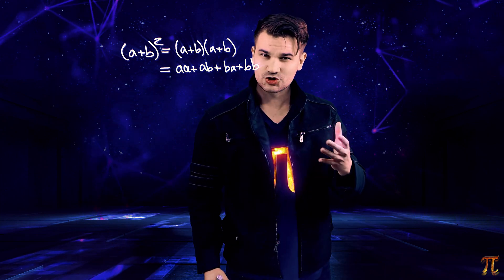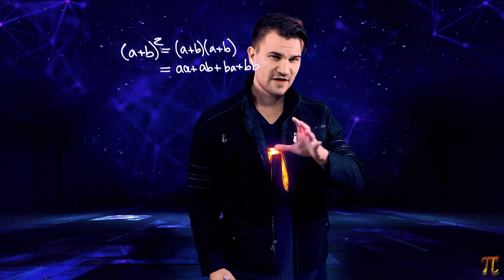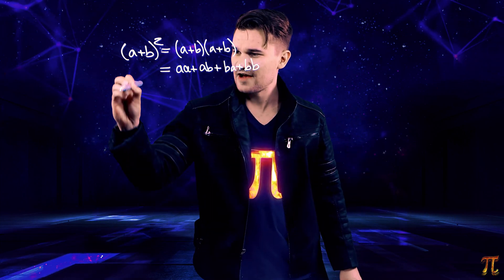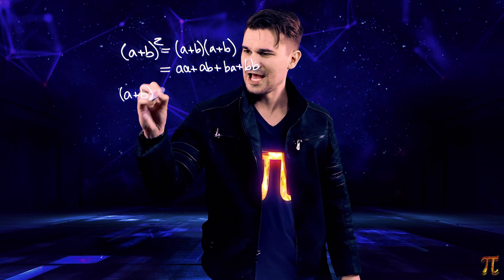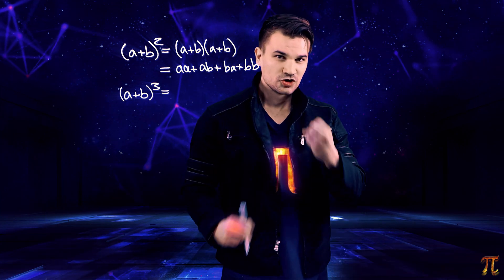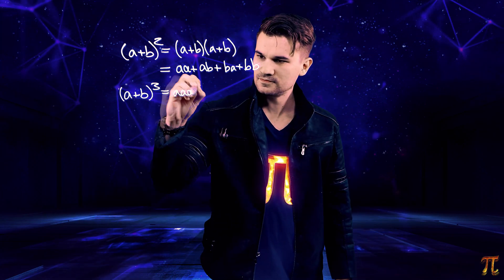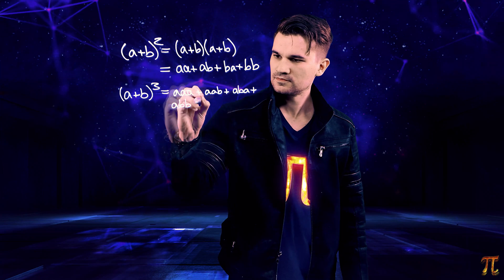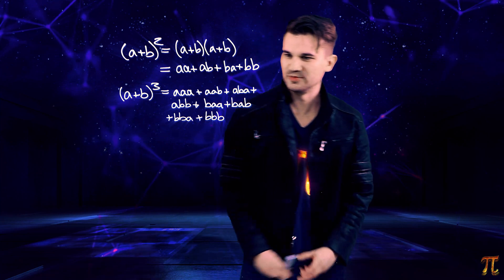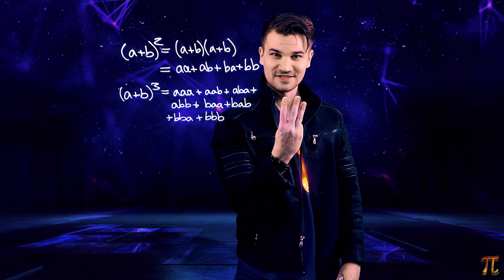And this is generally true even for other exponents — it's just going to change the string size. You can see that from just how the distributive property is going to run through these expressions. In other words, if we have a plus b and we cube it, that is nothing other than the sum of all the strings of three characters with a's and b's in them. And that is a plus b cubed — it's the sum of all the strings of three characters consisting of a's and b's.